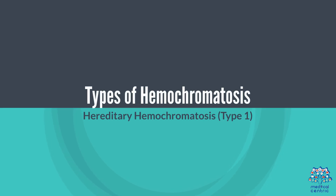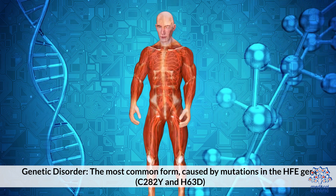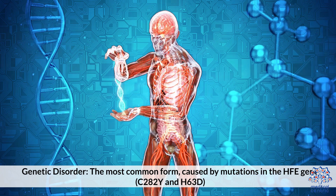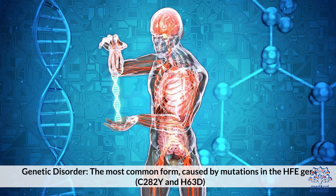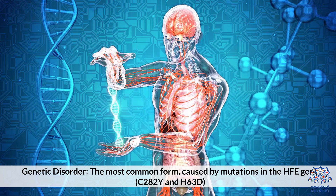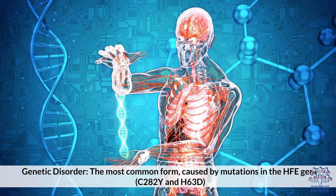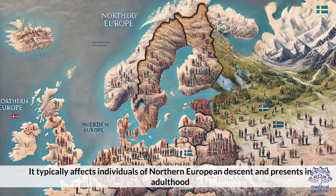Types of Hemochromatosis. Hereditary Hemochromatosis, Type 1 — Genetic Disorder: The most common form, caused by mutations in the HFE gene, specifically C282Y and H63D. It typically affects individuals of Northern European descent and presents in adulthood.